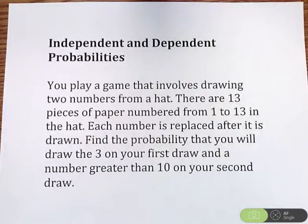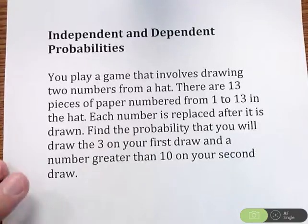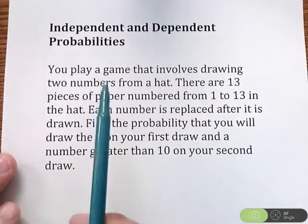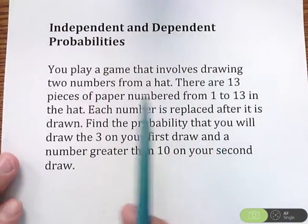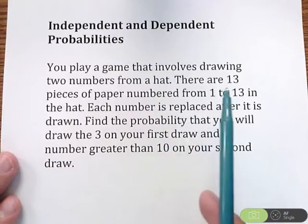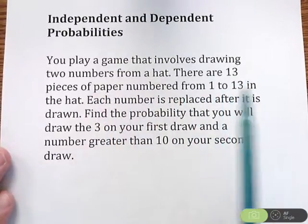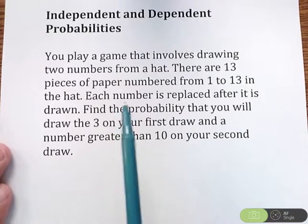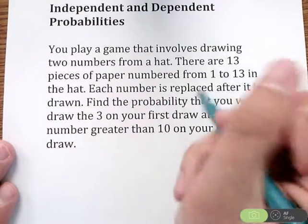Alright, we're going to look at some independent and dependent probabilities. So here we go. You play a game that involves drawing two numbers from a hat. There are 13 pieces of paper numbered 1 to 13 in the hat. Each number is replaced.